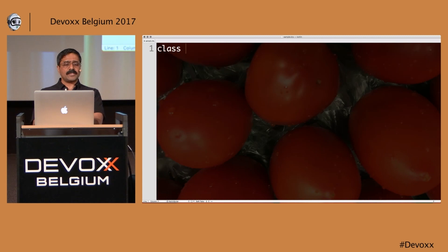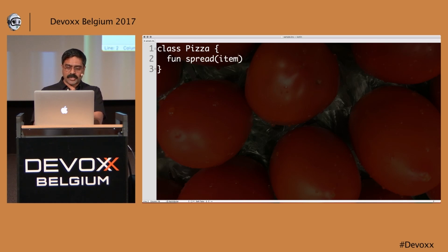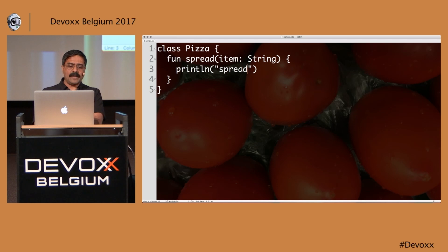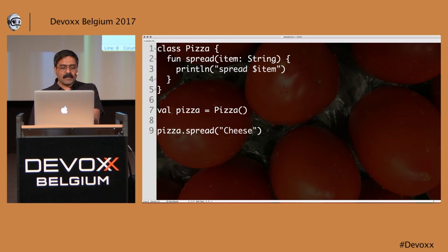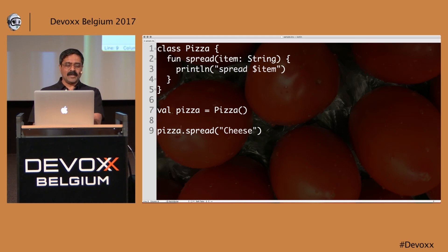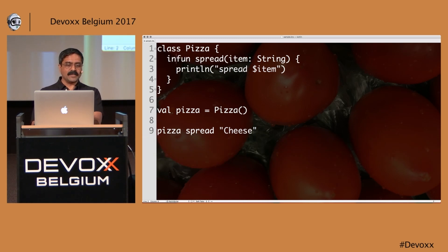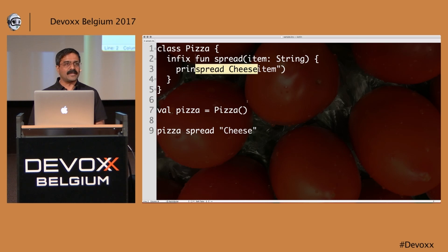Let's say we have a class called Pizza. The class Pizza has a method called spread that takes an item String. I call pizza.spread('cheese'). That runs fine. But wouldn't it be cool if we can write it without the dot and parentheses — just 'pizza spread cheese'? Sadly, that doesn't work by default. But we can fix it by marking the method as 'infix', and we get some beautiful elegant syntax with it.